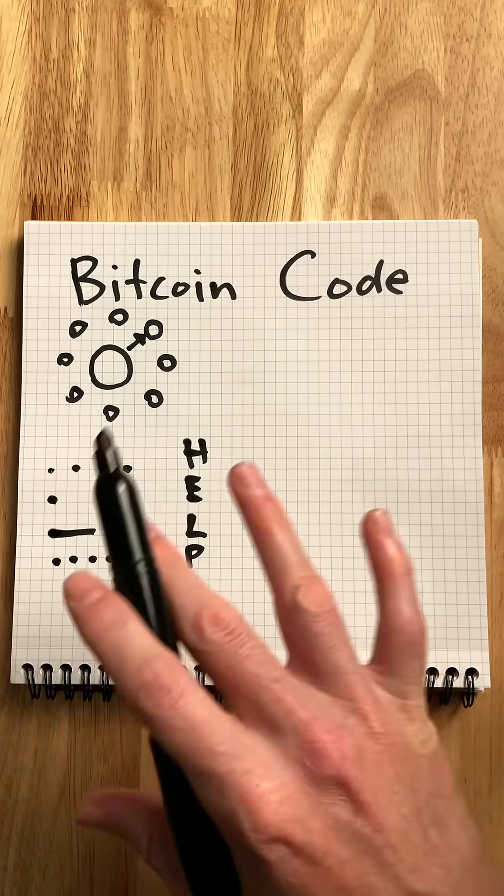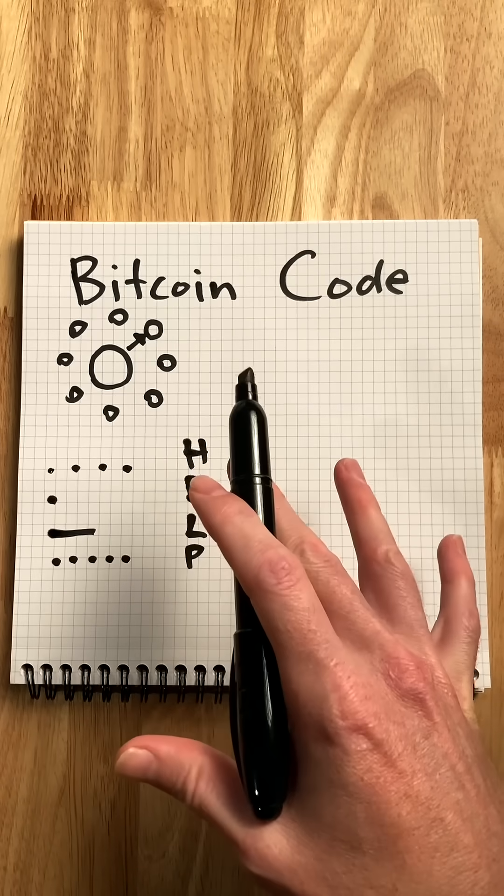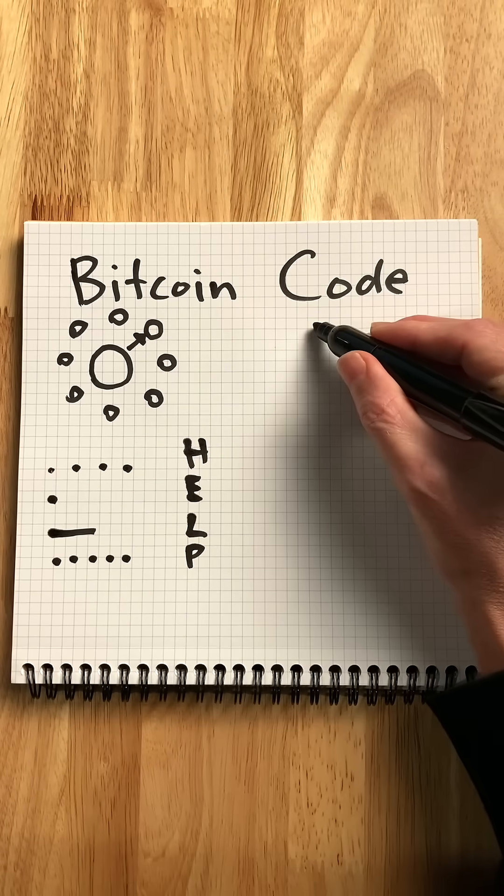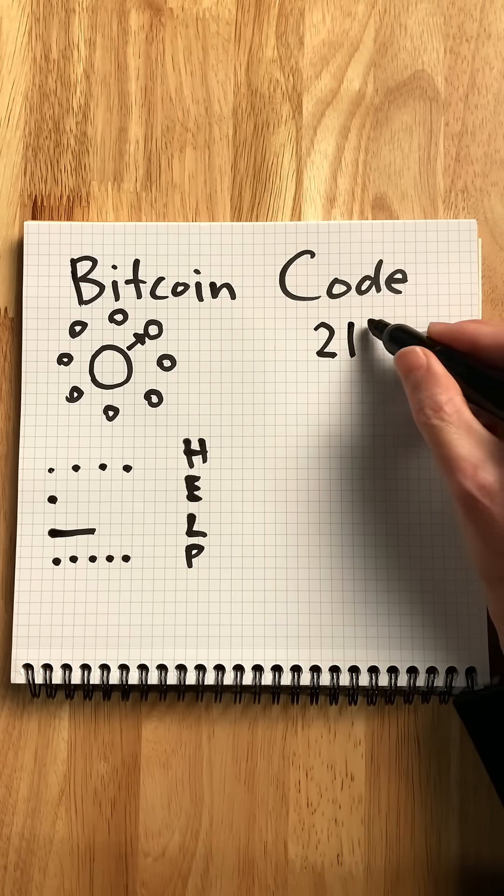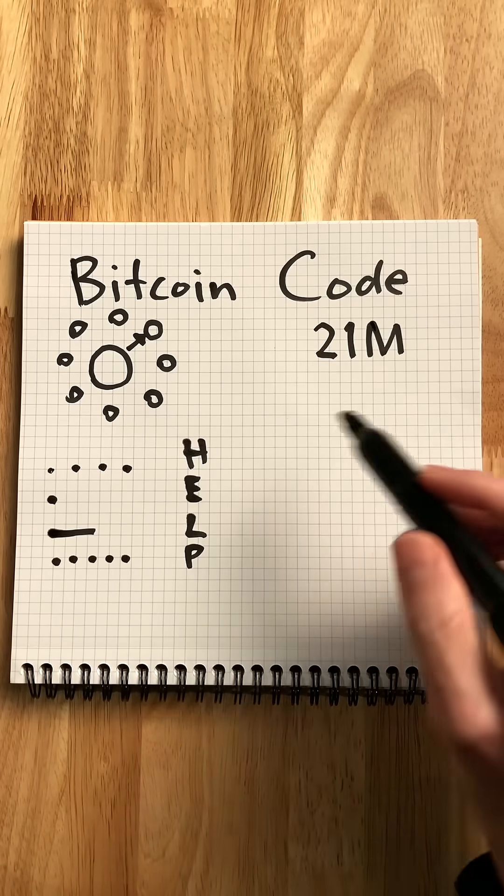For instance, one rule in Bitcoin is that there can only be 21 million coins, so there's a hard cap on its supply. If everyone decided they wanted to change that rule, then that rule would change.